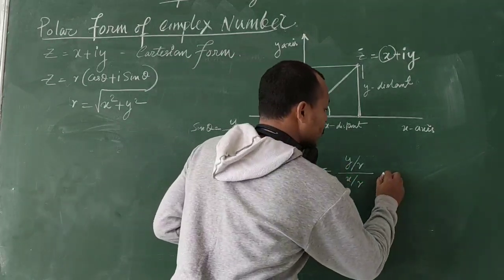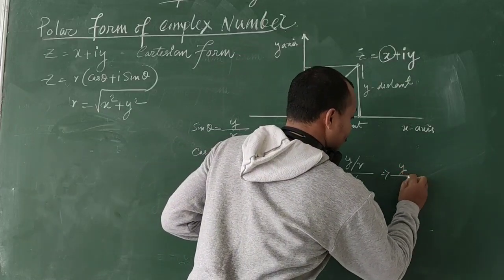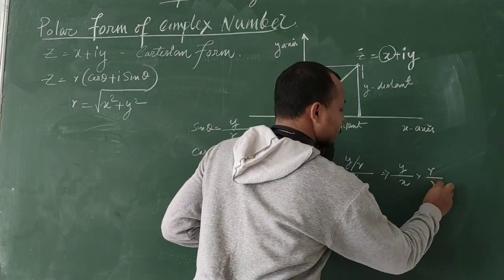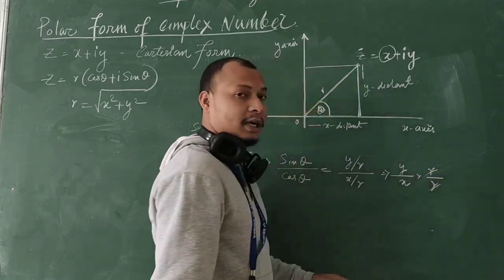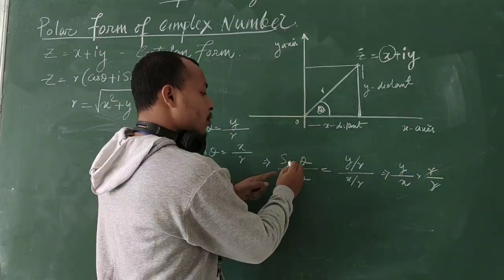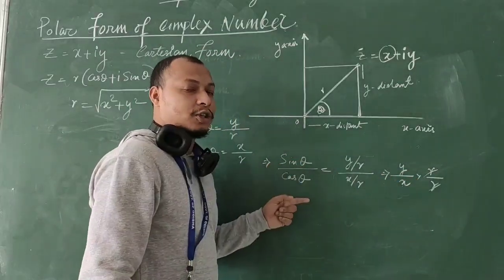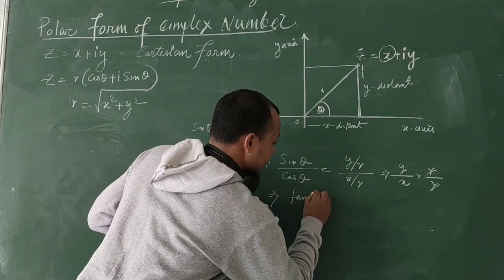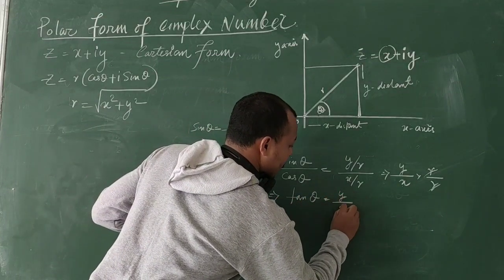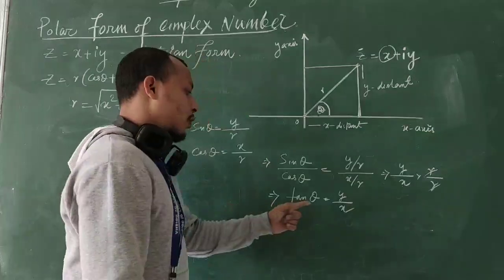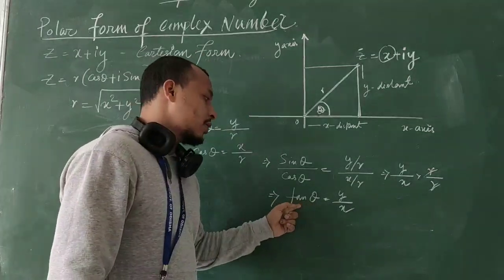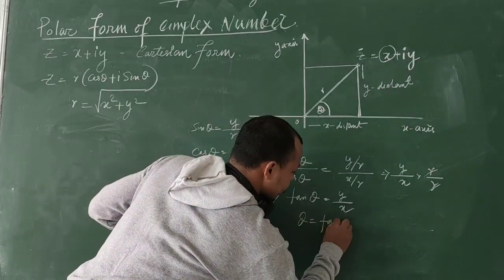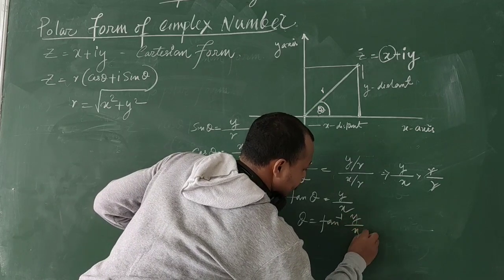Since sinθ/cosθ = tanθ, we get tanθ = Y/X. Therefore θ = tan⁻¹(Y/X). So θ is equal to the inverse tangent of Y over X.